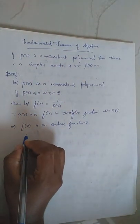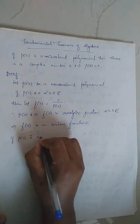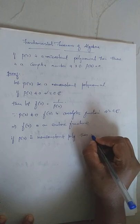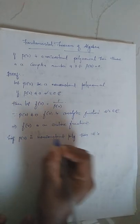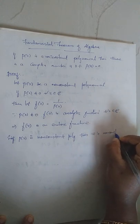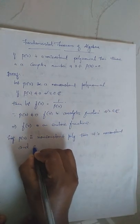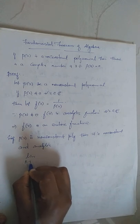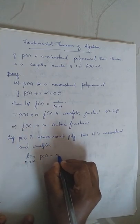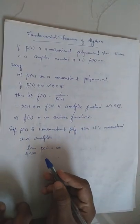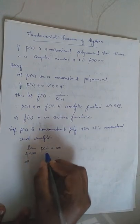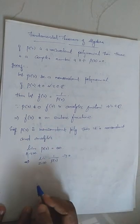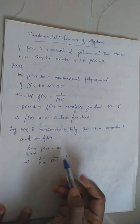In the previous video, we proved that if P(z) is a non-constant polynomial, it is a non-constant analytic function. When a function is non-constant and analytic, then the limit as Z tends to infinity of P(z) equals infinity. That means P(z) cannot be bounded. So when P(z) tends to infinity, its reciprocal 1/P(z) will go to 0.